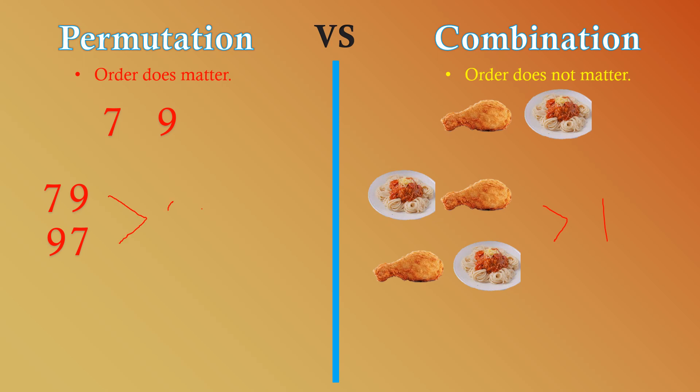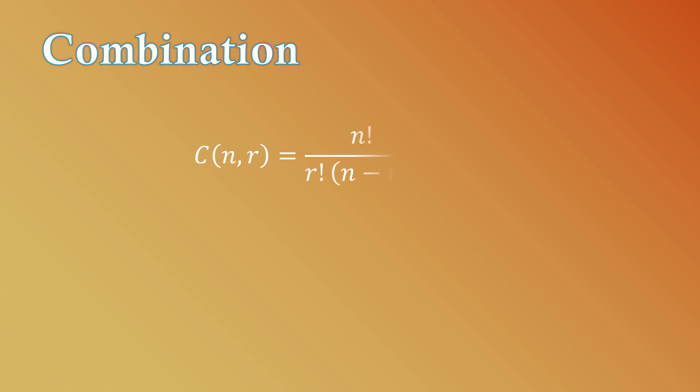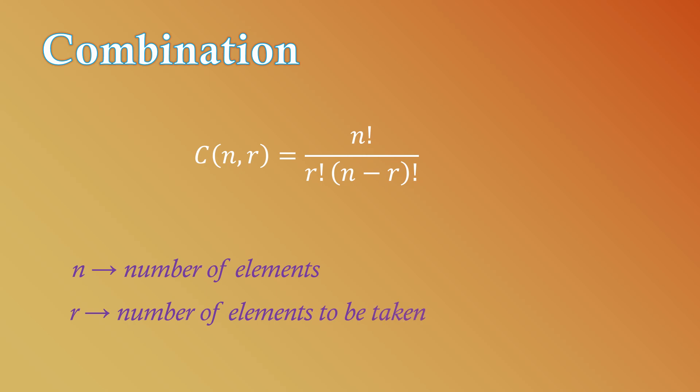A different arrangement creates a different set in permutation, but in combination, a different arrangement does not make a different set. Whenever we deal with problems involving combination, we use the formula: the combination of n taken r at a time equals n factorial over r factorial times the quantity n minus r factorial. Here, n represents the number of elements present in the problem, and r represents the number of elements to be taken or used.